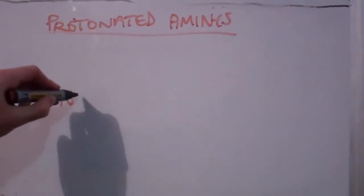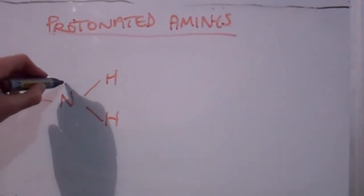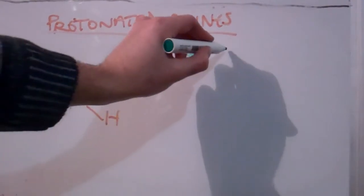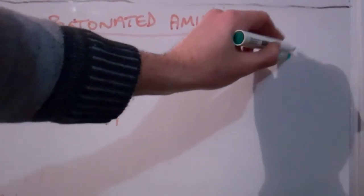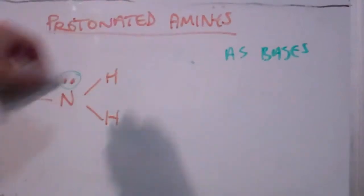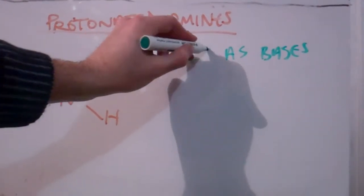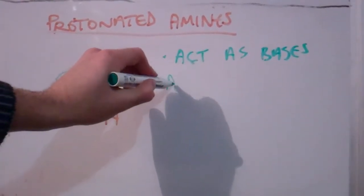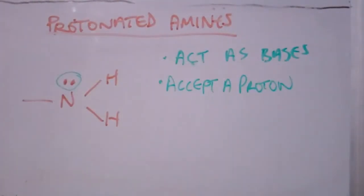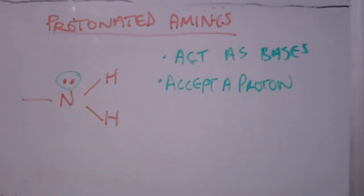Let's look at some of the properties of amines. The amino group has an unbonded electron pair on the nitrogen, which means that amines can act as bases. Amines are able to act as a base and accept a proton due to that unbonded pair of electrons on the nitrogen atom.